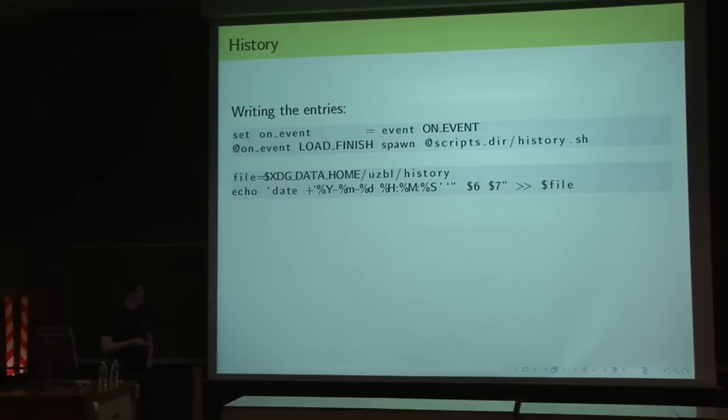So, history. How does that work? On the left, you see the on_event. That's just a variable which uzbl-core will expand for you. So, the string, the second string on the first block is an actual command that uzbl-core will interpret for you. So, what it basically means, on the event that the load is finished, spawn that script. And what that script does, it just echoes the current date and time and the page URL and name into the defined file. As you can see, $6 and $7, those are just parameters that uzbl-core will always append when you execute the command so that you just have some useful parameters in your scripts that you can use.